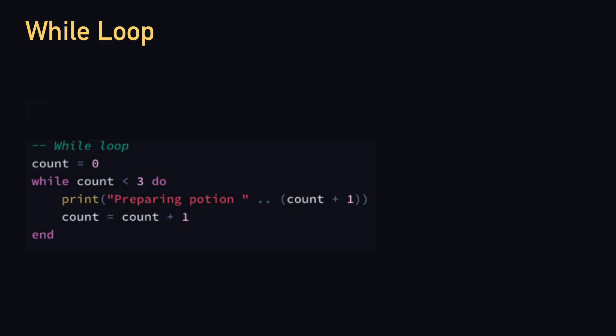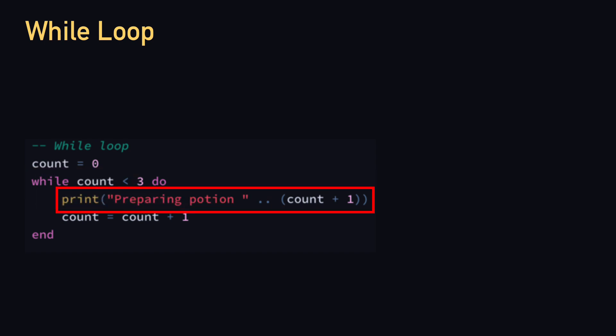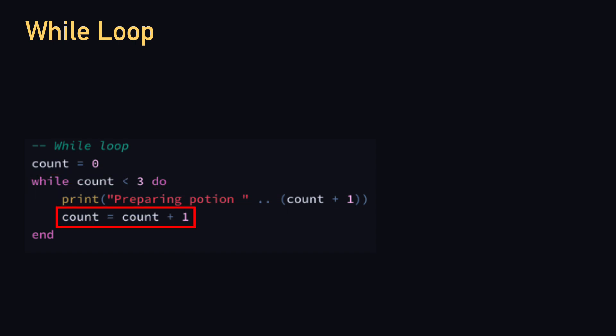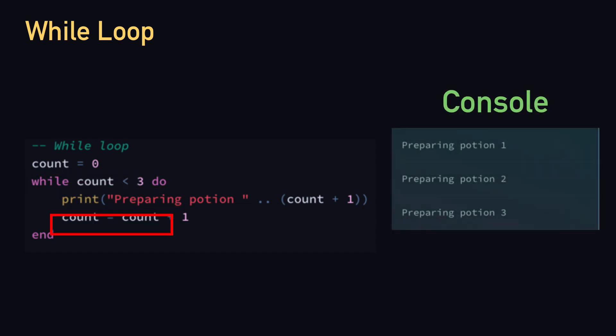Next thing we're going to look at is loops. The first loop is the while loop. The while loop continues to run if a condition is met. In this example, we check if count is less than 3; if it continues to be less than 3, it keeps looping. Count begins at 0, it prepares a potion, count increases by 1, and it continues until count is no longer less than 3, at which point it exits the loop and stops preparing the potion.